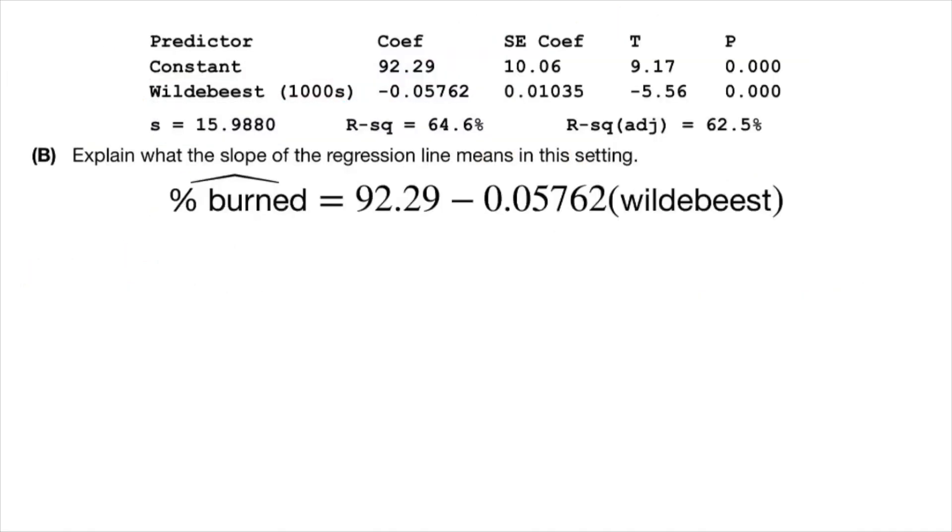Letter b, explain what the slope of the regression line means in this setting. So our slope is negative 0.05762. And if you recall from your days in algebra, slope is just the change in y over the change of x. So let's say that that is equal to negative 0.05762. But that doesn't look like a fraction that we're used to. So let's just stick it over 1.